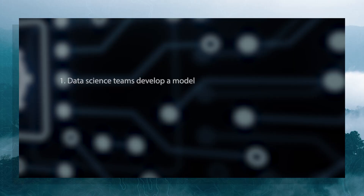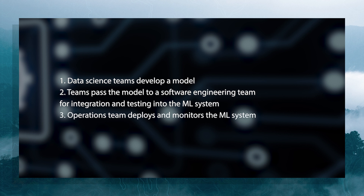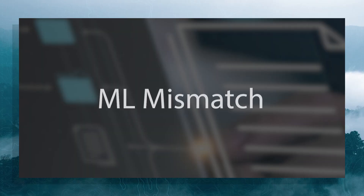Organizations often struggle with moving machine learning components into production systems because different teams work independently during different stages of system development. For example, data science teams develop a model, then pass it to a software engineering team for integration and testing, and finally an operations team deploys and monitors the ML system. Because these teams often work independently and without any system or mission context, they tend to make incorrect assumptions about decisions that other teams and stakeholders have made, leading to what we call ML mismatch.